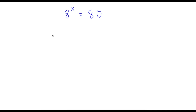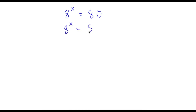Welcome back to Clicking Academics. In today's video, I'm going to be teaching you how to solve this exponential equation. We have 8 to the power of x is equal to 80. The first thing I'm going to do is rewrite 80 as 8 times 10. So we have 8 to the power of x is equal to 8 times 10.